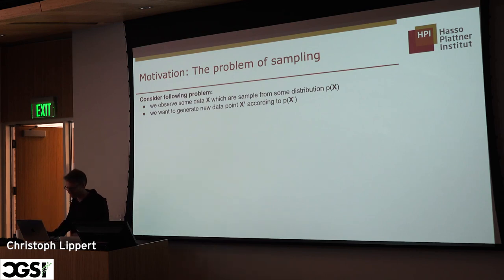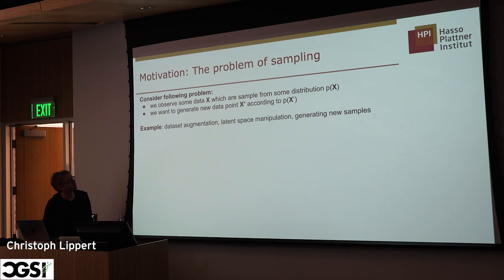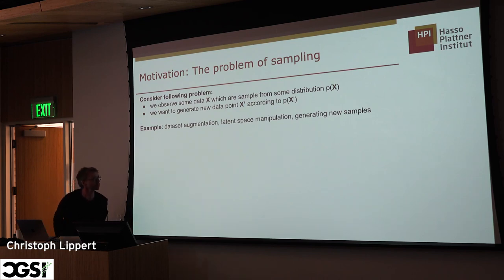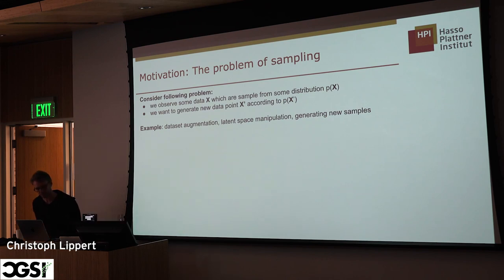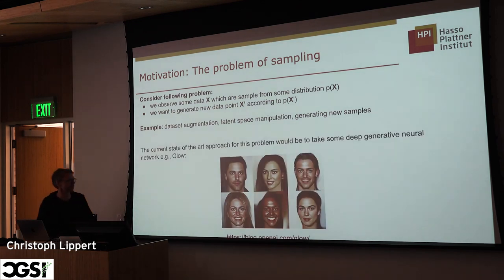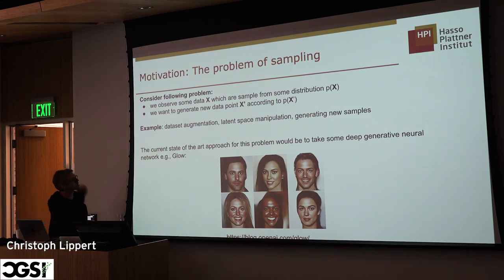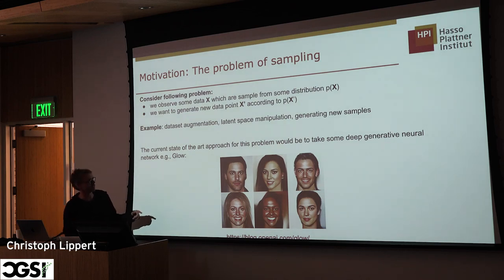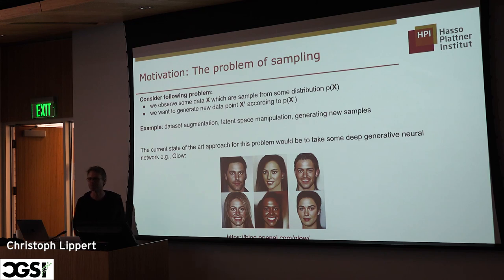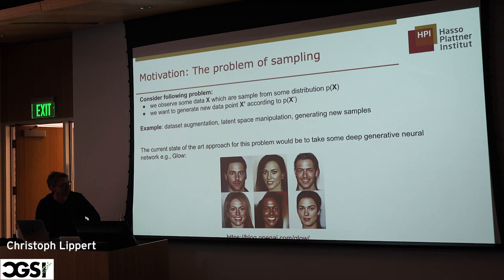Alternatively, you might want to generate artificial data from the same distribution. This is used for dataset augmentation, latent space manipulation — generating samples with particular properties, interpolating between samples. The faces generated by neural networks you may have seen are actually generated by a normalizing flow — the Glow model. The quality is not as good as state-of-the-art StyleGAN, but flows have the advantage of giving you the likelihood.